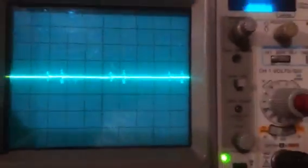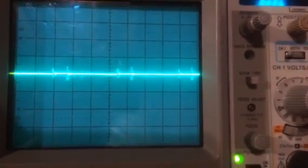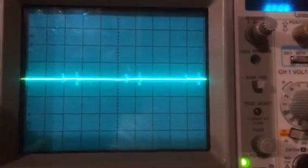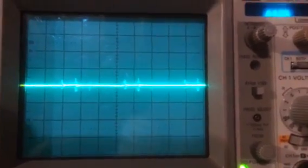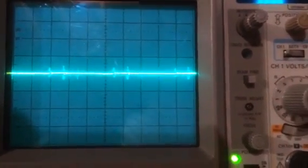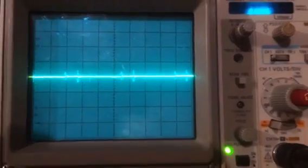Now we have the scope probe on the output side of the LC network. Let's take a look at the scope. You can see the noise level has been reduced substantially. In fact, I'm no longer on 1 volt per division. I had to go switch it to 500 millivolts per division.